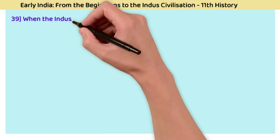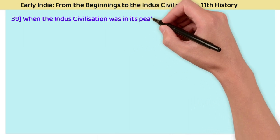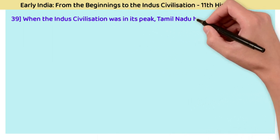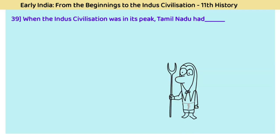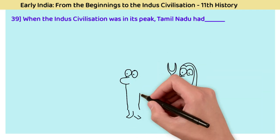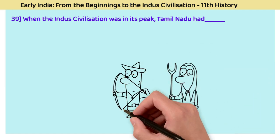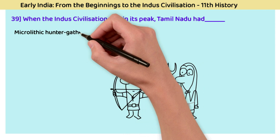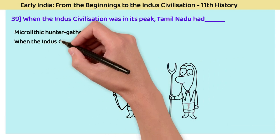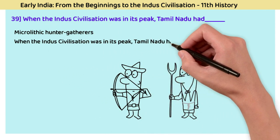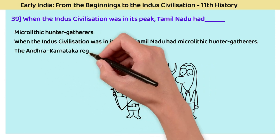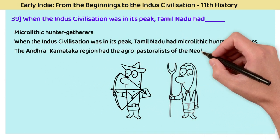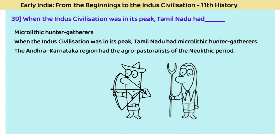Question 39: When the Indus civilization was at its peak, Tamil Nadu had microlithic hunter-gatherers, and the Andhra-Karnataka region had agro-pastoralists of the Neolithic period.